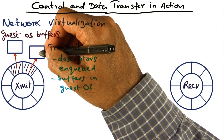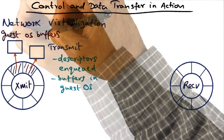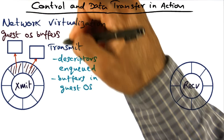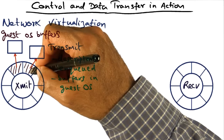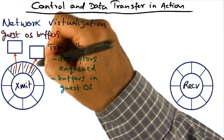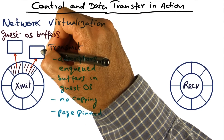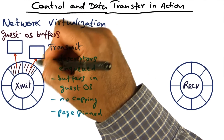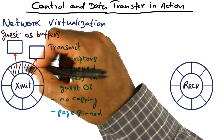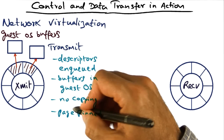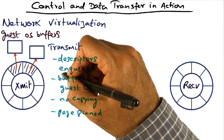The packets that need to be transmitted are not copied into Xen, but the buffers that contain these packets are in the guest operating system buffers. The guest embeds pointers to these buffers in the descriptors enqueued for transmission by the hypervisor. So there's no copying of the packets themselves from the guest operating system buffers into Xen, because the pointers to the guest operating system buffers have been embedded in these descriptors. For the duration of the transmission, the pages associated with these network packets are pinned so that Xen can complete the transmission.